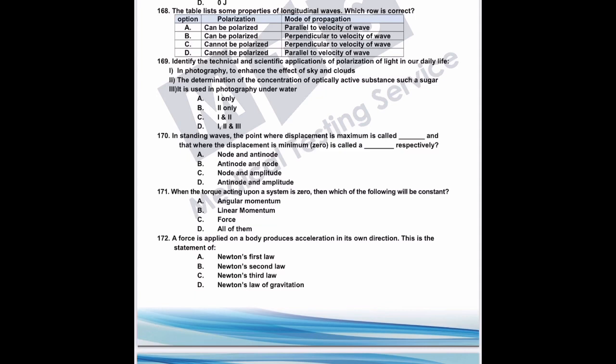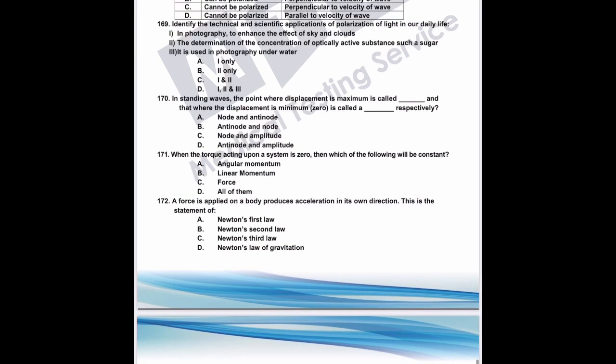Question 169: identify technical and scientific applications of polarization of light. In photography, it is used to enhance the effect of sky and clouds — correct. Determination of concentration of optically active substances such as sugar, using levorotatory or dextrorotatory solutions — correct. 'Used in photograph under earth' has no relation to polarization. The correct answer is C: one and two.